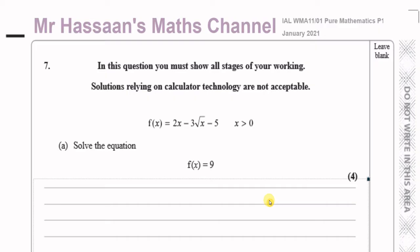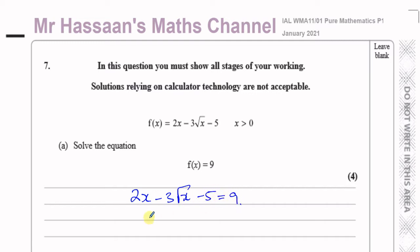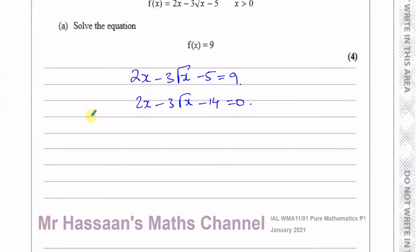This question is about solving the equation f(x) equals 9, where f(x) equals 2x minus 3 times root x minus 5, and x is greater than 0. The first thing I'm going to do is equate this to 9. So 2x minus 3 times the square root of x minus 5 equals 9. Then I'm going to subtract 9 from both sides, giving 2x minus 3 times root x minus 14 equals 0. What we have here is a hidden quadratic equation.